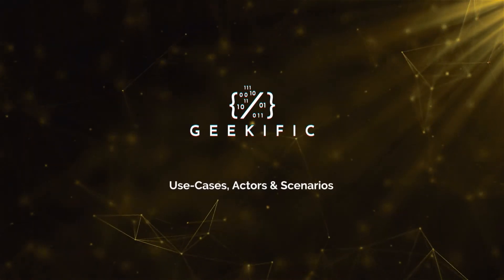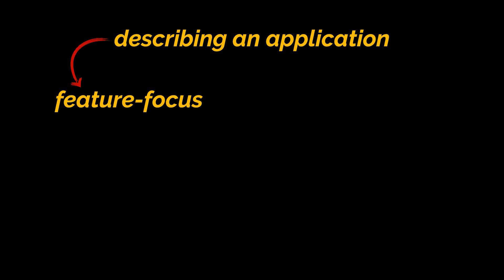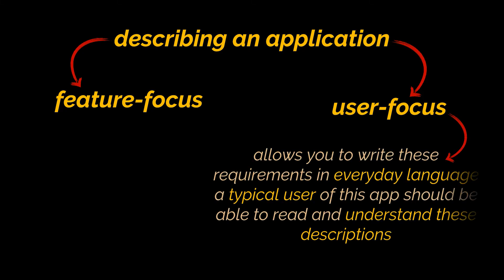Welcome to the channel. If you think about it, there are two ways to describe what an application is meant to do. You can focus on the features or the requirements of your app — saying the system must do this or the application must achieve that — or you can focus on the users of your application by answering how a certain user accomplishes a particular goal. Describing your application in a user-focused manner allows you to write requirements in everyday language.